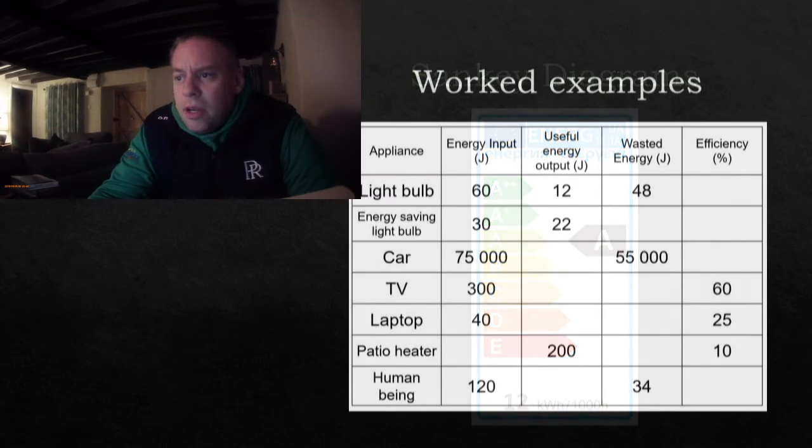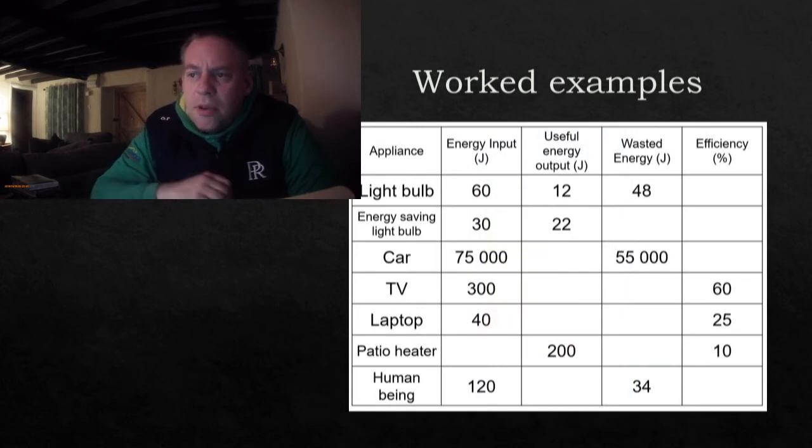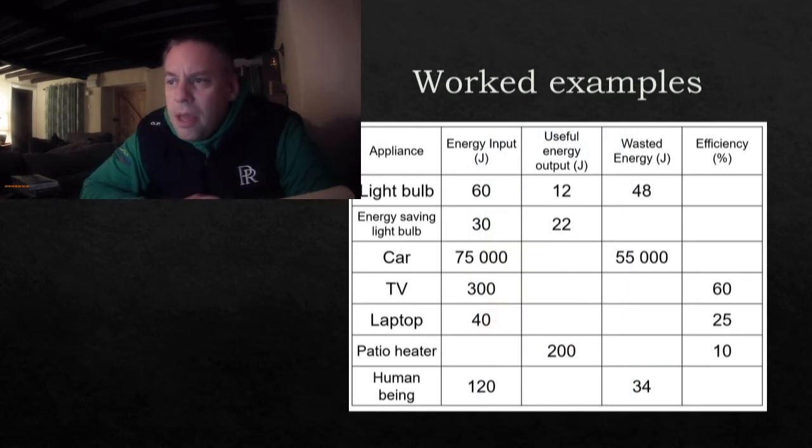Right, let's wrap this up, we're going to do a summary in a second, but first of all here are some more questions as a table. So I'll help with the first one. So we've got a light bulb, we've got the input energy of 60, we've got the useful energy of 12, and we've got the energy wasted, which is 48 joules. And it asks you to fill in the box, so you've got to fill out each of those boxes.